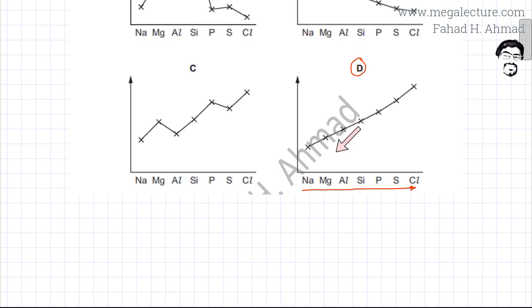Sodium would be the least electronegative and chlorine would be the most electronegative in the group. So the y-axis represents electronegativity, so this is the graph that you should obtain if you want to plot electronegativity versus period 3 elements.